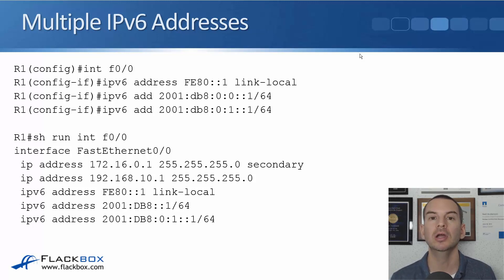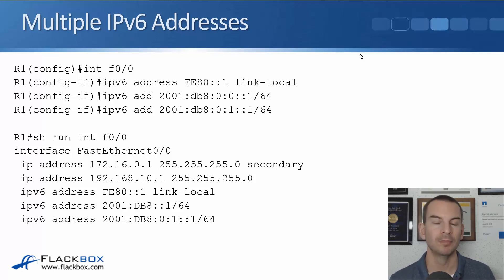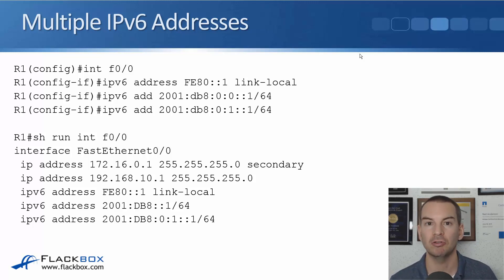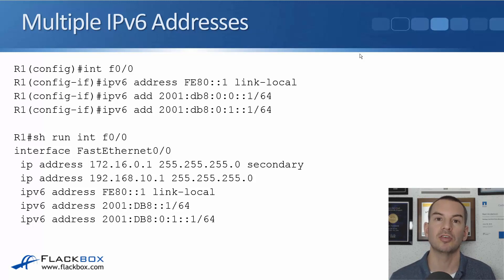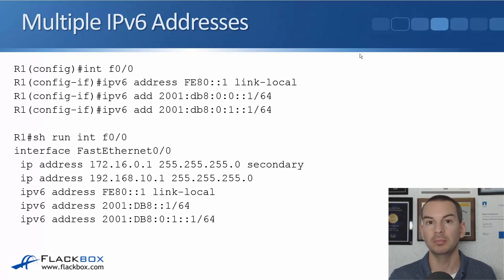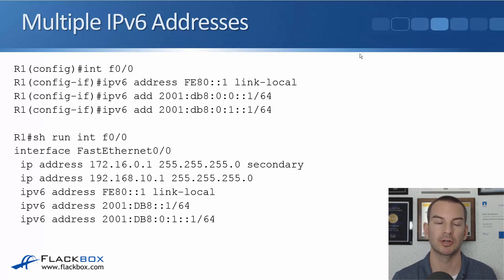This is a dual-stack router, meaning it runs both IPv4 and IPv6. If a packet arrives with an IPv4 destination address, it uses IPv4 routing. If a packet arrives with an IPv6 destination address, it uses IPv6 routing. Whether IPv4 or IPv6 is used depends on the application on the end host sending traffic through the router.